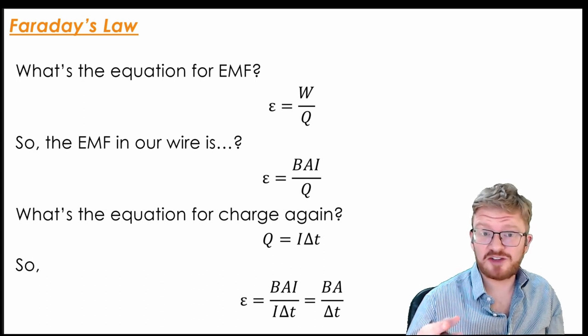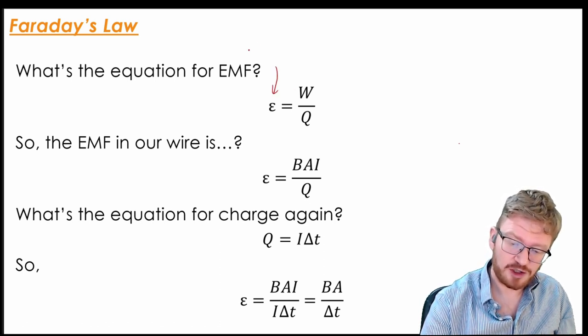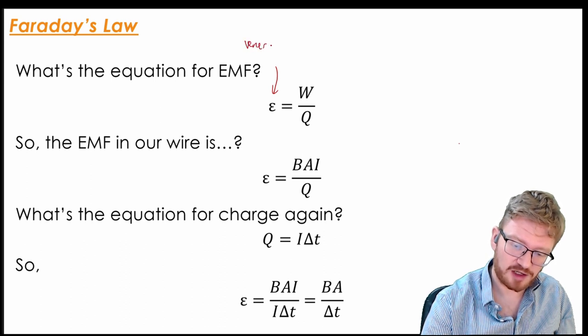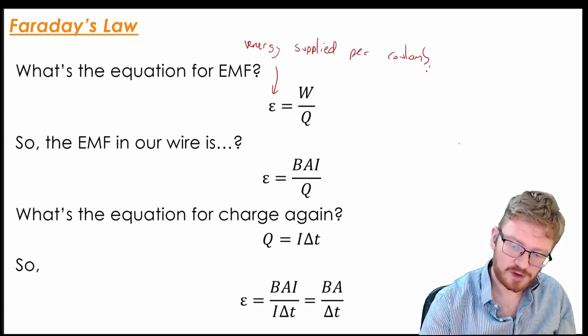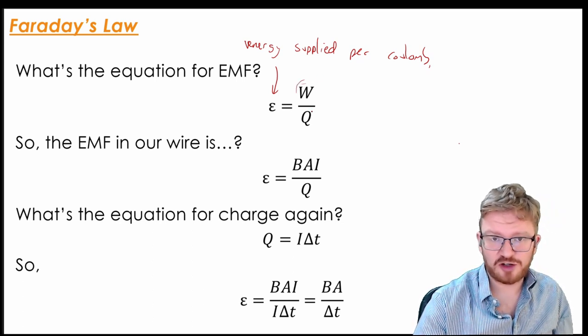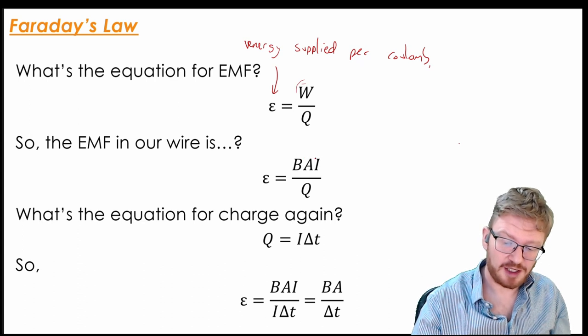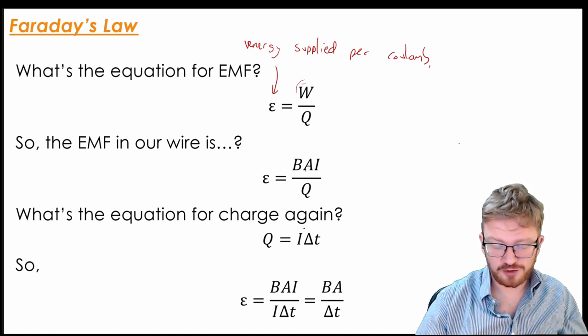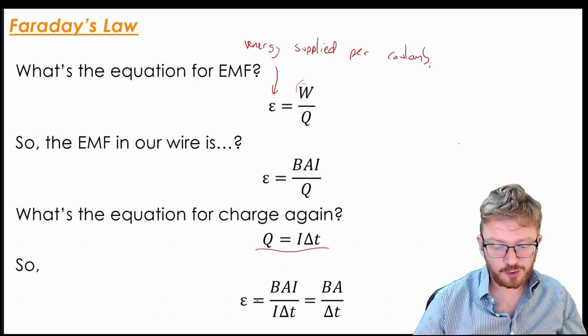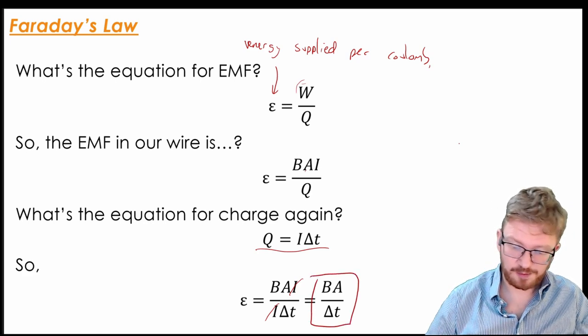Now, if you think back to IGCSE actually, we know that voltage is work done per unit charge. So an EMF, remember an EMF is energy supplied per Coulomb. So that's going to be work done on the charge divided by the total amount of charge. So if I substitute that back into our previous equation, we can say that the EMF will be BIA over Q, because I already worked out what the work done was. I also know that the equation for charge is Q is I times T. So what I can say is if I substitute in for Q, I get BIA over I delta T. And then I can cancel out the I's and get this equation, BA over delta T.